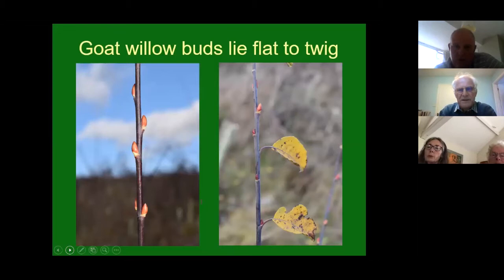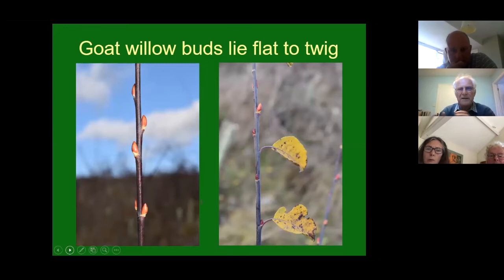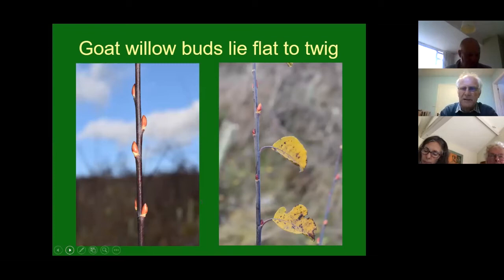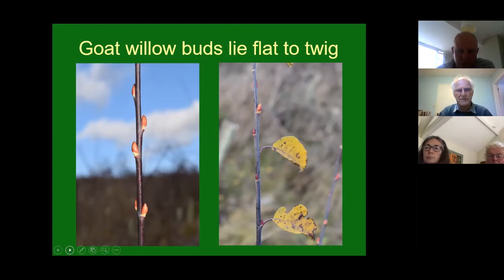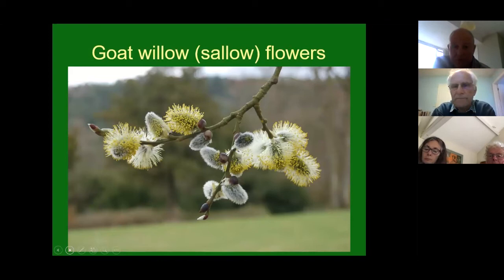Goat willow - the sallow - has buds that generally alternate along the twig, lying quite flat and tight to it on a little bulge in the twig that holds the bud. When looking at plants in winter, these are the sorts of features you're looking for: the colour of the bud, how it's fixed to the tree, whether they're in pairs or alternate, whether uniformly around the twig. In early spring the sallow produces very furry flower buds that actually attract quite a lot of insects, even though you might think it wind-pollinated.